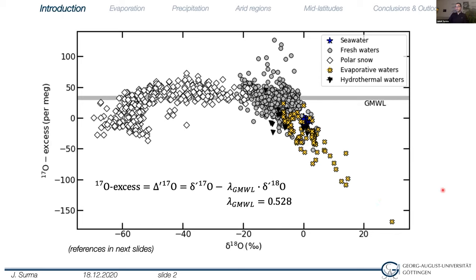When we look at the triple oxygen isotope distribution in waters across the globe, we actually see a large variation. In the range between something like minus 35 per mil and five to zero per mil in delta 18O, these waters fall on a trend — a horizontal line — which is more or less in agreement with the global meteoric waterline. At the isotopically light and heavy tails, we observe a negative 17OxS, with polar waters showing values down to something like minus 40 per meg, or around minus 100 per meg at the heavy delta 18O tail.